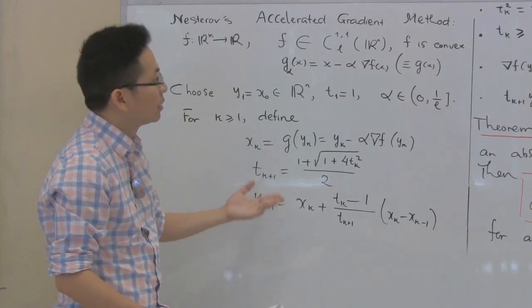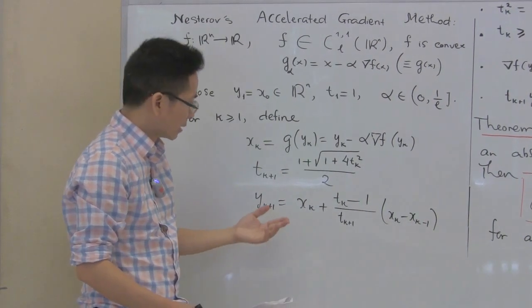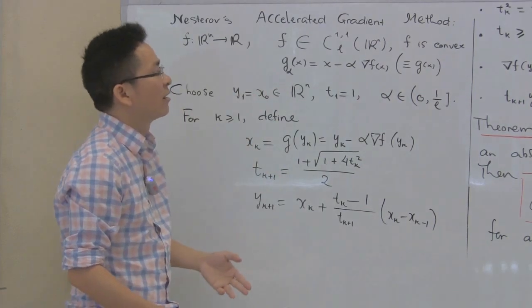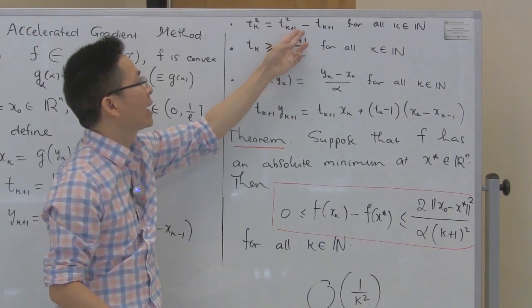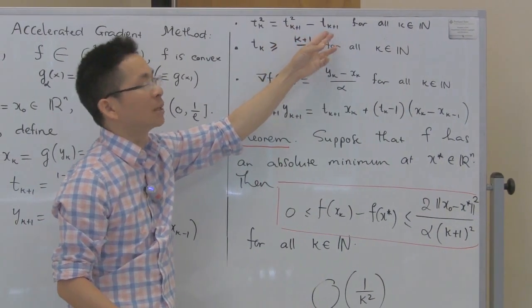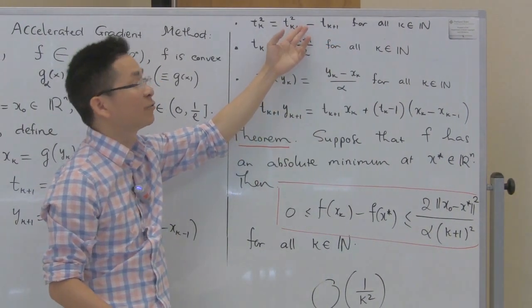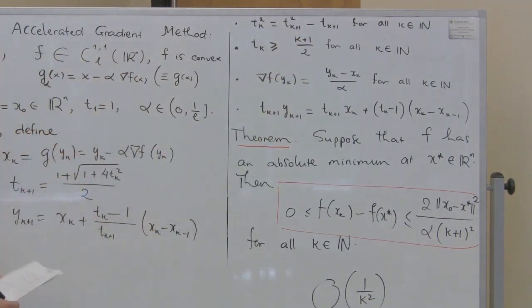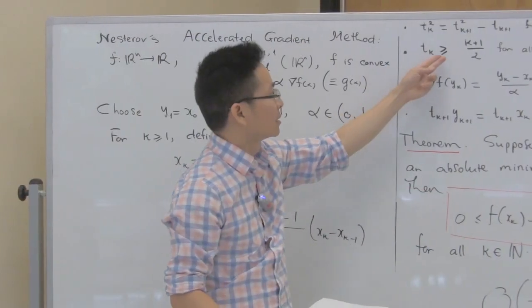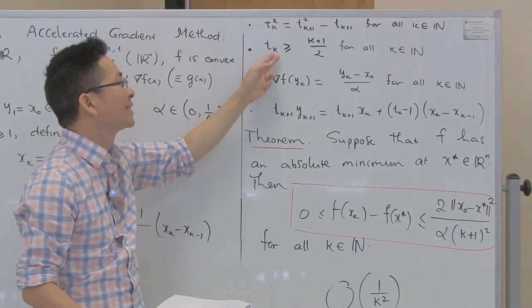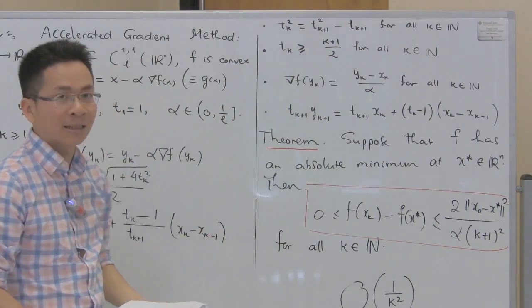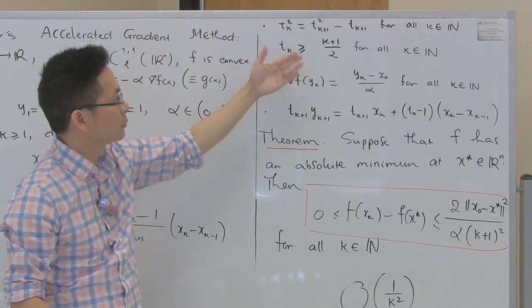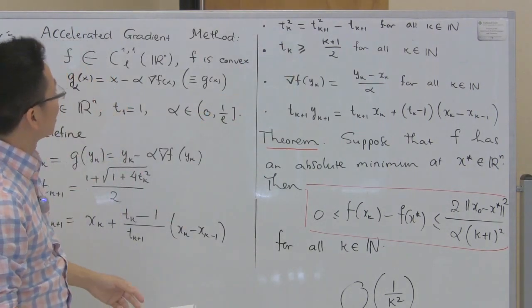From here we can see some simple properties of these sequences. First of all, t_k^2 equals t_{k+1}^2 minus t_{k+1}. This follows directly from the definition of t_{k+1}. By induction, we can easily show that t_k is greater than or equal to (k+1)/2. This is a simple exercise we can work on at home.